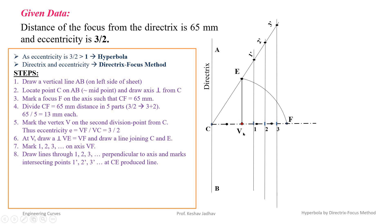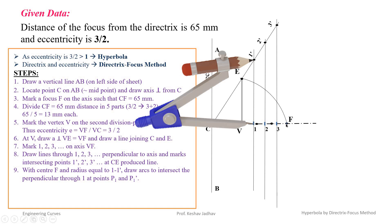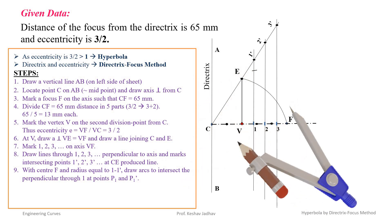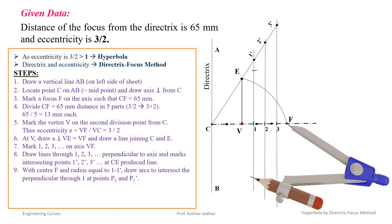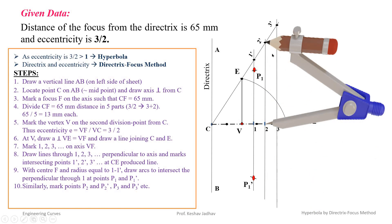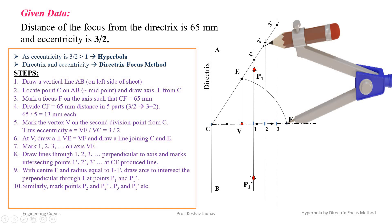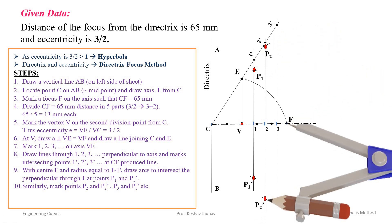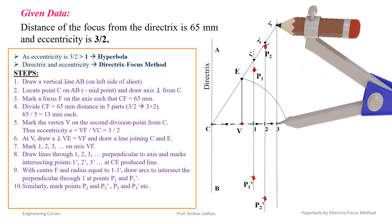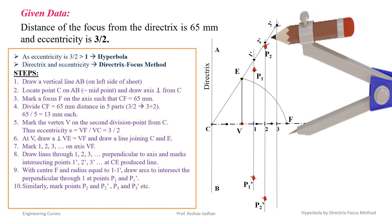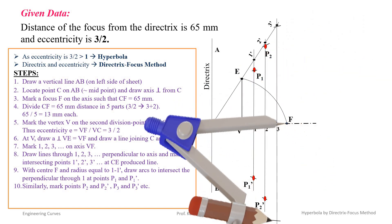Using a compass, take distance equal to 1–1', take the focus F as center, and draw arcs on line 1–1' on both sides of the axis. Name these points P1 and P1'. Similarly, take distance equal to 2–2', take focus as center, and draw arcs on line 2–2' on both sides of the axis — mark these P2 and P2'. Then take distance equal to 3–3', take focus as center, draw arcs on line 3–3' above and below the axis, and mark points P3 and P3'.